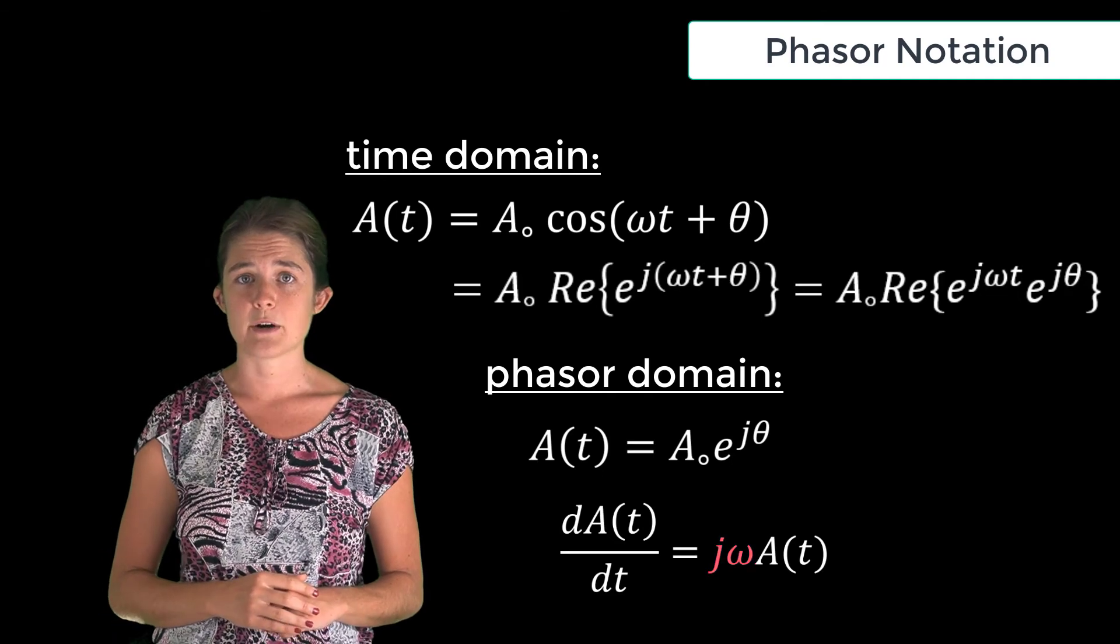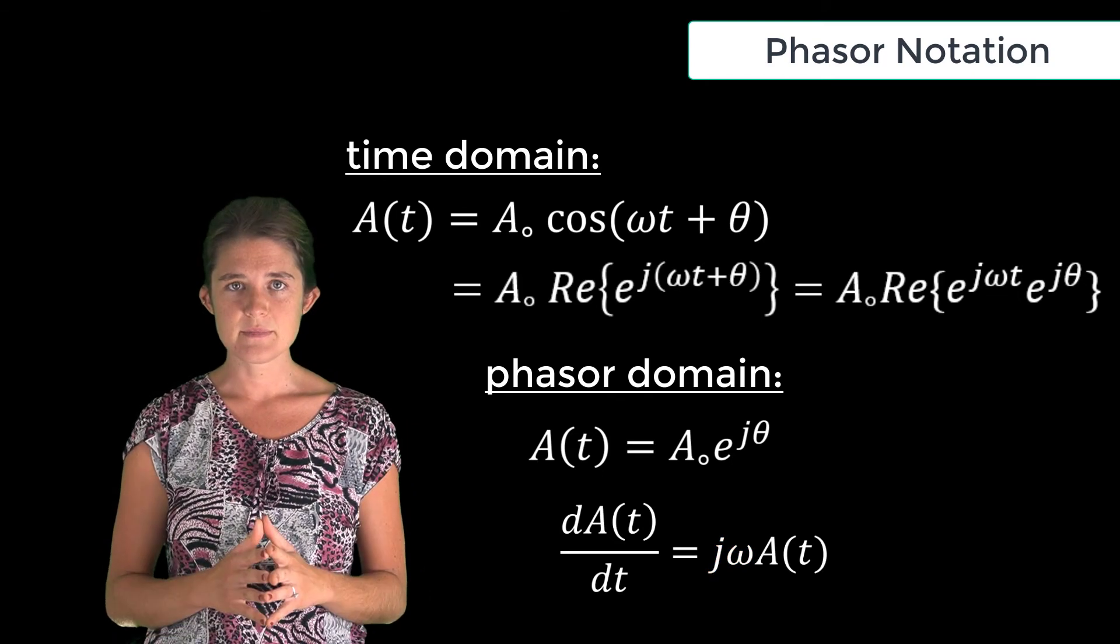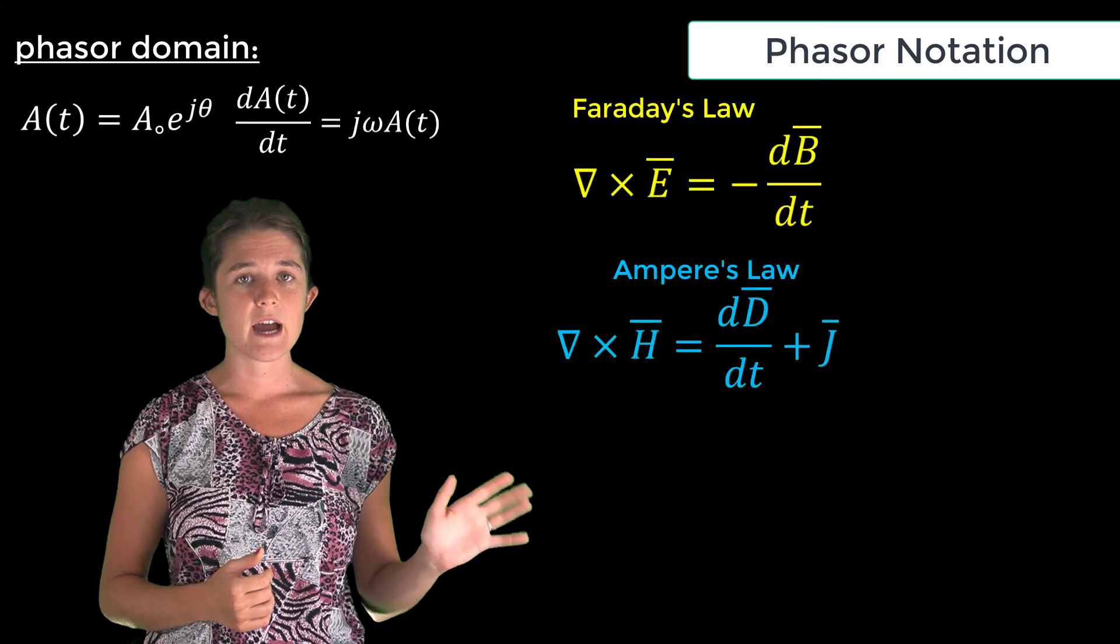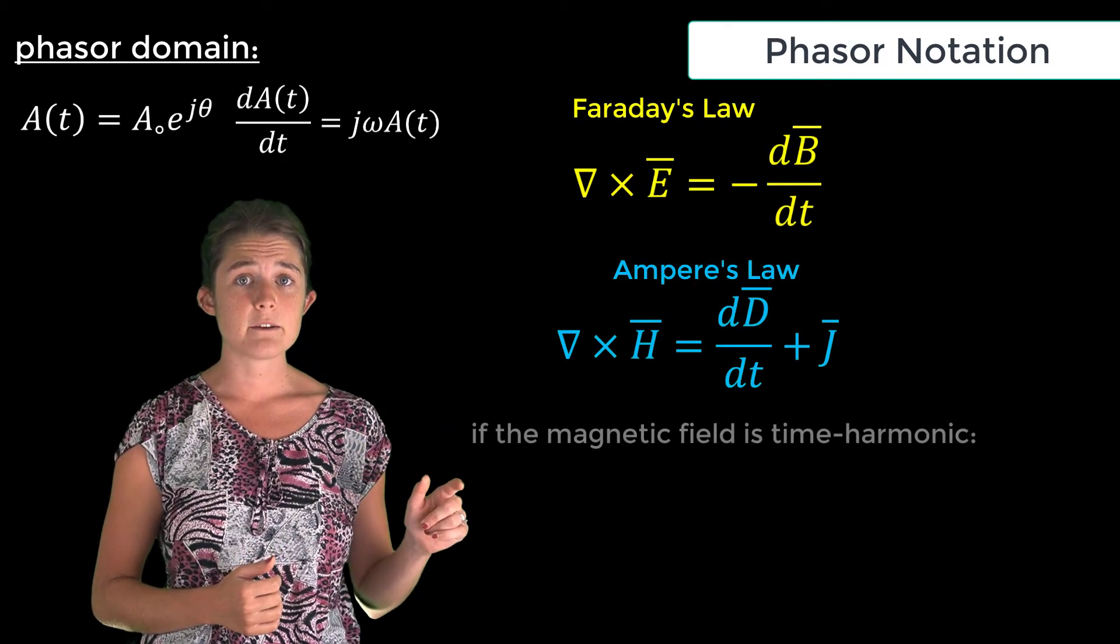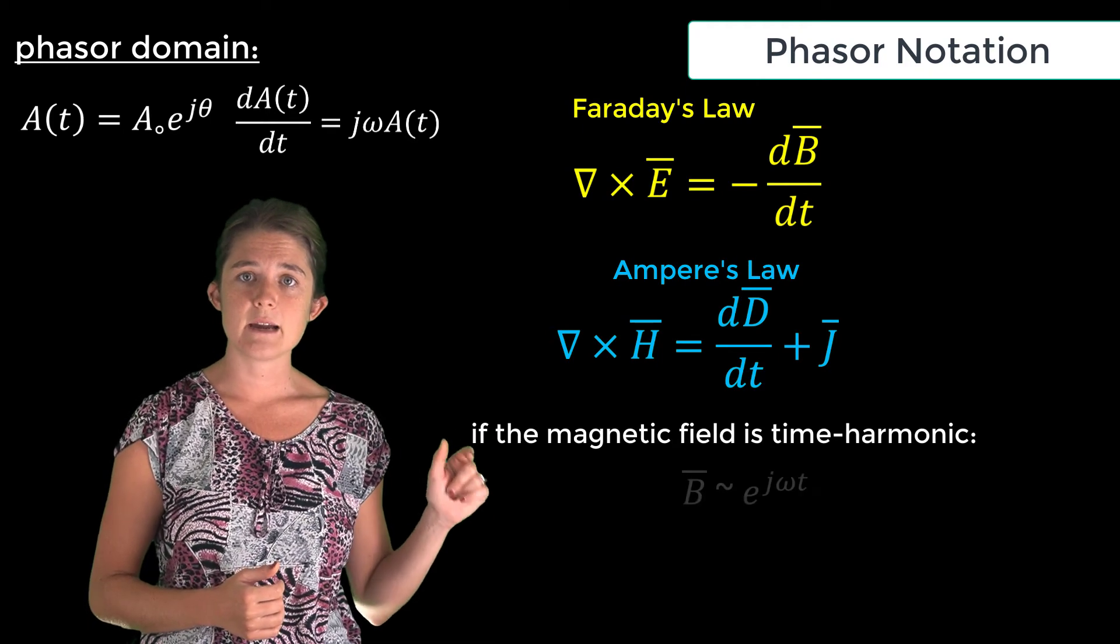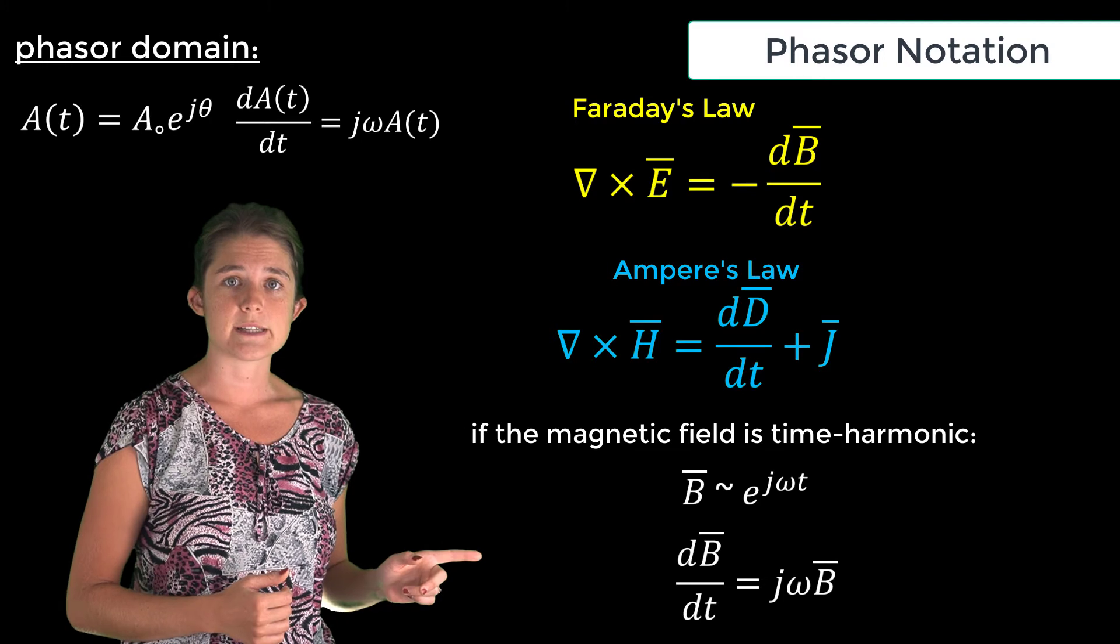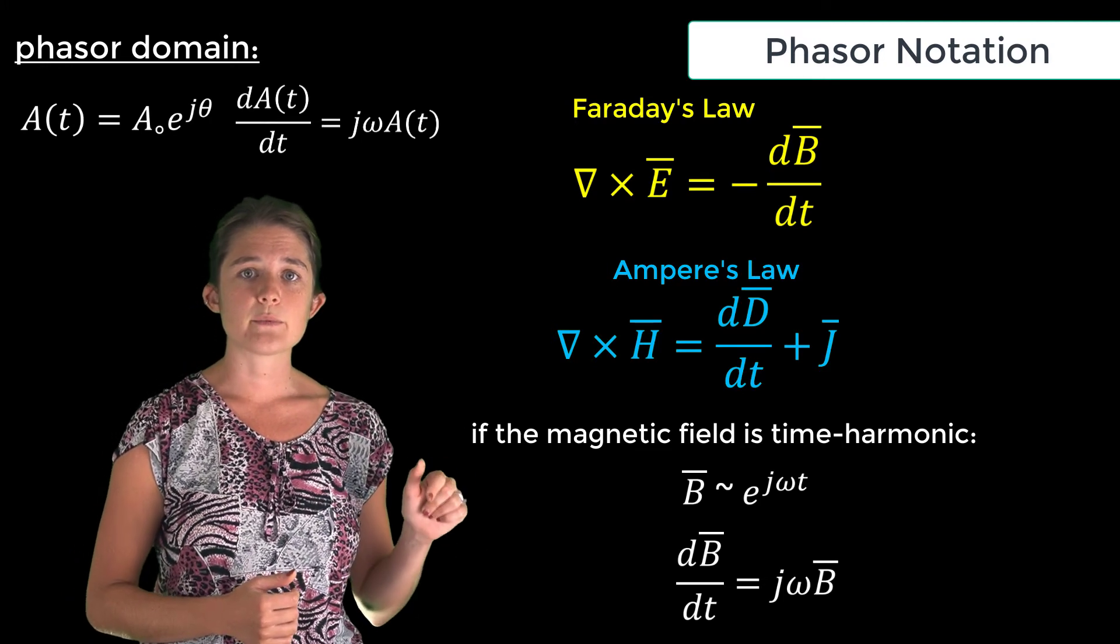We'll often use phasor notation when talking about time harmonic electromagnetic waves. In light of this fact, we can revisit Faraday's and Ampere's laws, which have these time derivative terms. If the magnetic field is time harmonic, then its time dependent term is e to the j omega t, and its derivative brings down a j omega. So we can write Faraday's law for sinusoidal signals like this: del cross E equals negative j omega B.